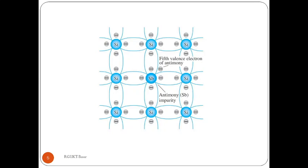We can observe the doping of antimony with silicon. When a pentavalent impurity is added to a semiconductor through diffusion or ion implantation, the added impurity displaces a semiconductor atom and forms four covalent bonds. In silicon we have four valence electrons, while antimony has five. Out of five, only four are used to form covalent bonds. The remaining fifth electron donates through the semiconductor crystal, behaving as a free electron.